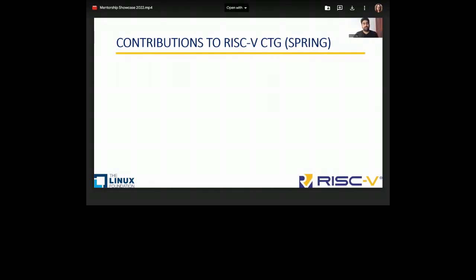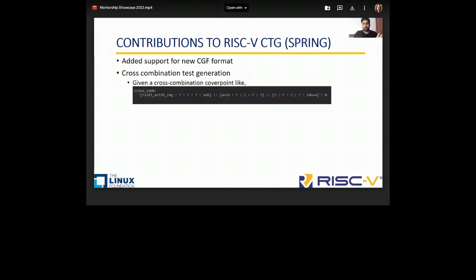Here are my contributions to RISC-V CTG. CTG stands for compliance test generator. What it essentially does is it takes a blueprint known as the cover group file to generate a corresponding test. The first task was the addition of support for the new CGF format. The second task is the addition of infrastructure to generate tests for instruction sequences. We call them cross-combination test generation, corresponding to the cross-comb node of the coverage file.